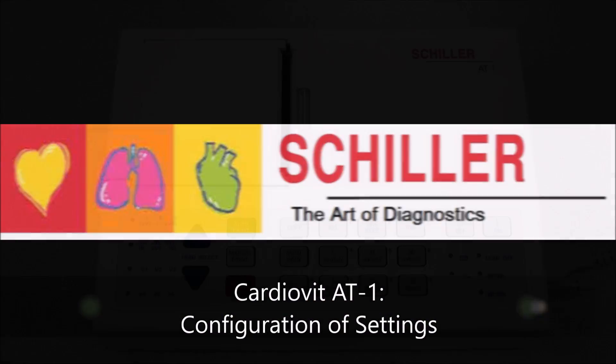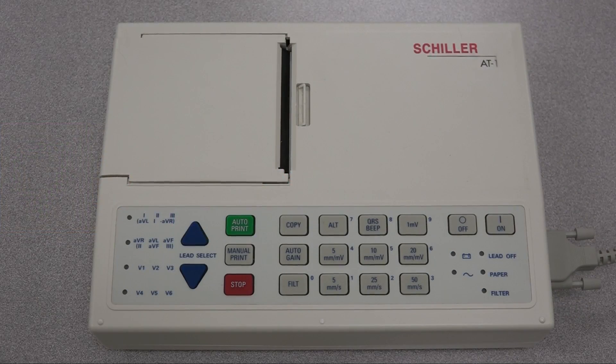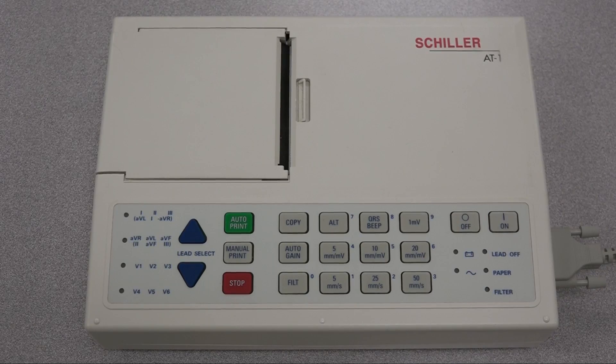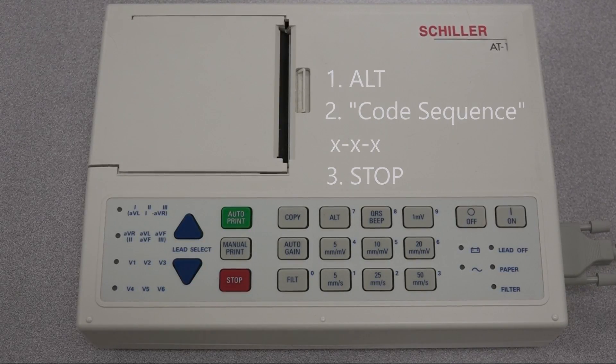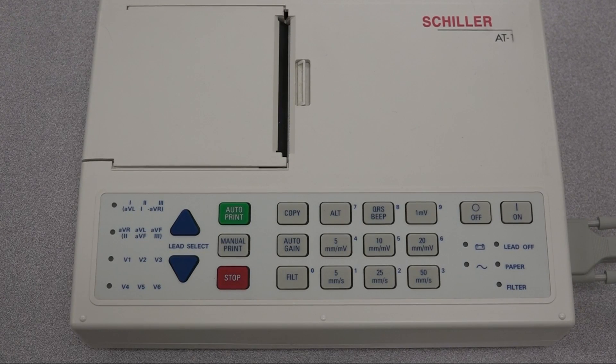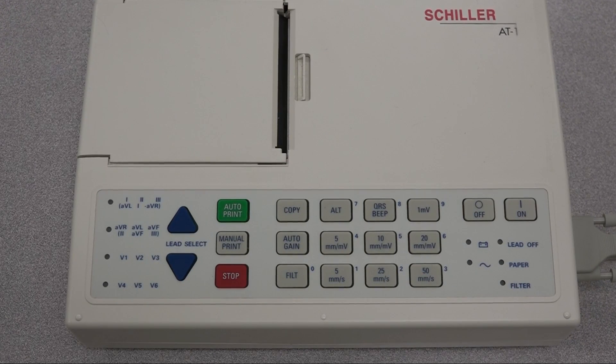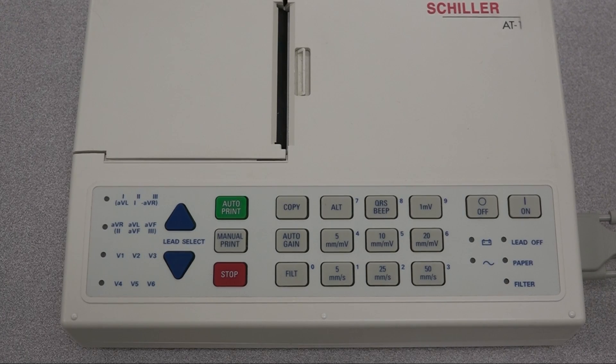Settings for AT1. Each parameter is set by means of codes which comprise a combination of keys starting with the ALT key. The setting is confirmed with a stop key. As soon as the ALT key is pressed, the keyboard is dedicated to the programming function. In the following slides, you can find the codes to configure each setting.